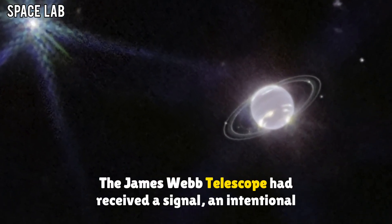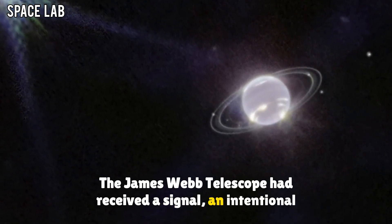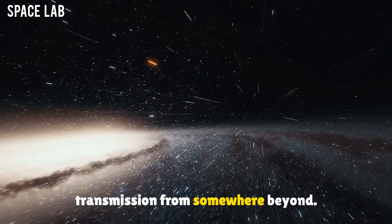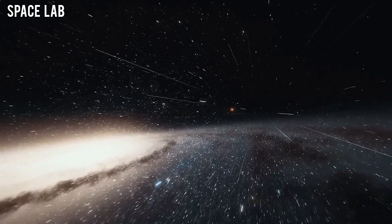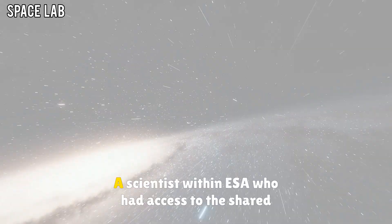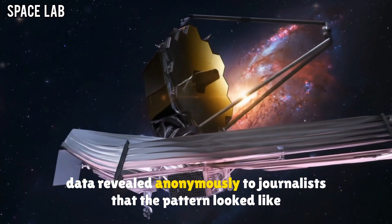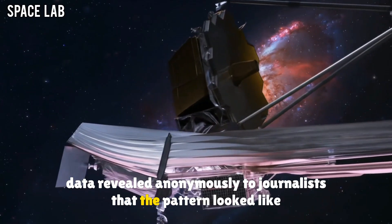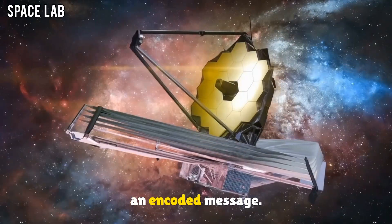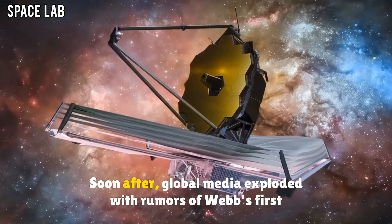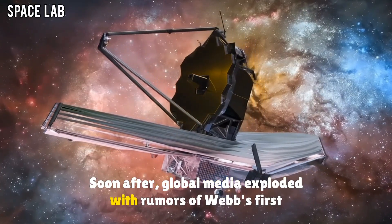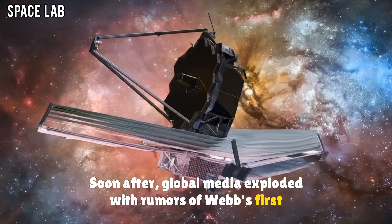But every test yielded the same chilling truth. The James Webb telescope had received a signal, an intentional transmission, from somewhere beyond. Word began to leak. A scientist within ESA, who had access to the shared data, revealed anonymously to journalists that the pattern looked like an encoded message.